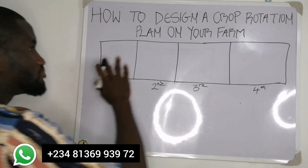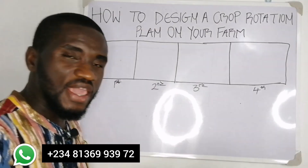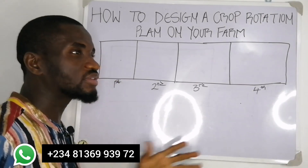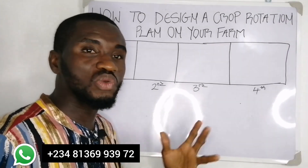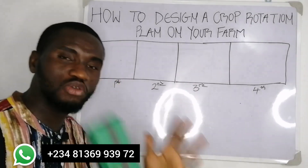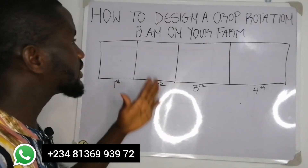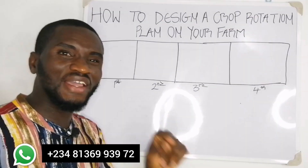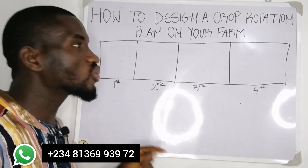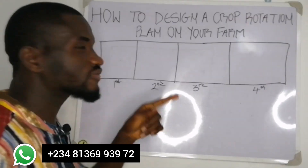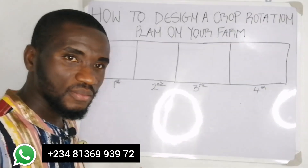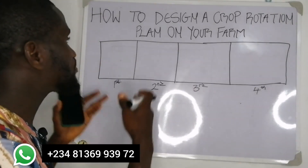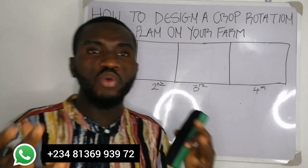Instead of planting maize all over your farm year after year, what will happen when you plant a particular type of crop continuously on a piece of land is that there will be disease and pest buildup. A particular crop has a kind of nutrient it desires the most — nitrogen, which is the favorite for maize, will be depleted. After the third or fourth year, your productivity will reduce and you will have pest buildup.